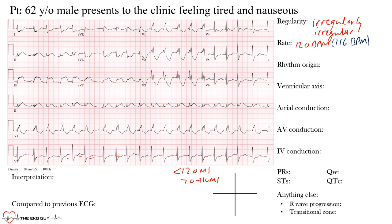Those deflections at the end are T waves, not P waves — you can confirm this by looking at leads above and below. So we have no P waves. We have an irregularly irregular rhythm at 116 beats per minute, no P waves, but consistent conduction throughout. The rhythm is coming either from the atria, AV junction, or ventricles given the wide QRS. Because it's irregularly irregular, the rhythm is likely coming from somewhere in the atria.